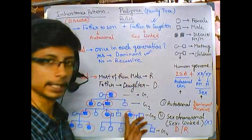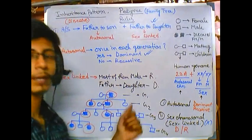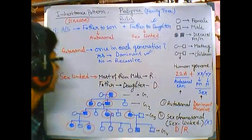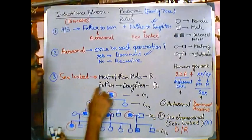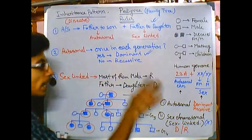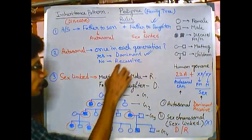So it must be sex linked inheritance. Now let us look at whether it is dominant or recessive. We know that if we get sex linked, if it is father to daughter, it is dominant. And also we can utilize the formula of dominant recessive here.